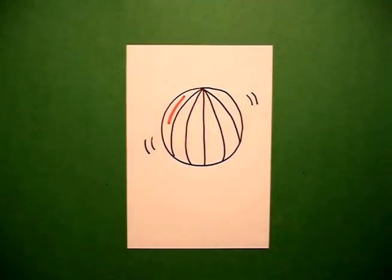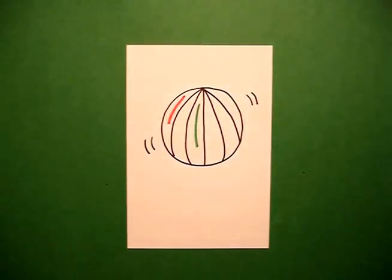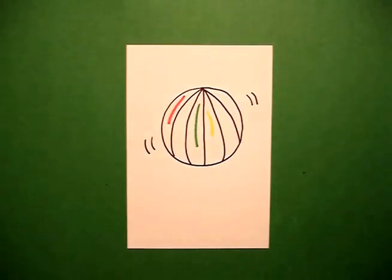So I'm going to start with red. I'm going to skip and go to green, yellow, blue, and skip again.